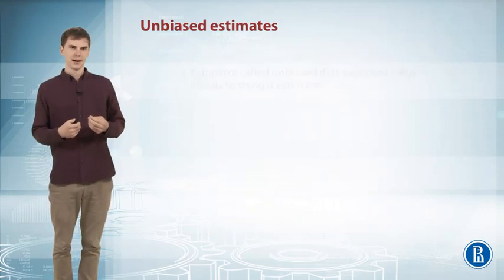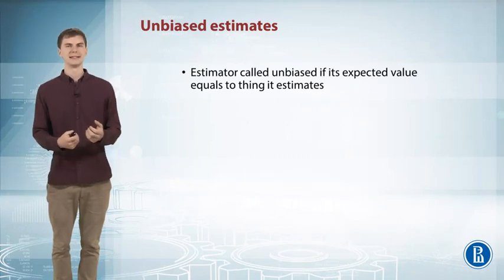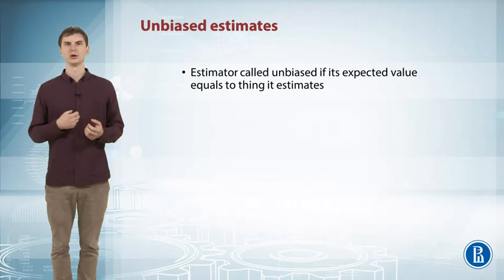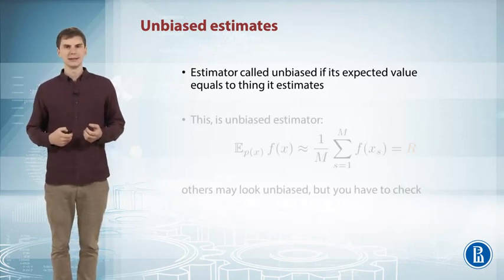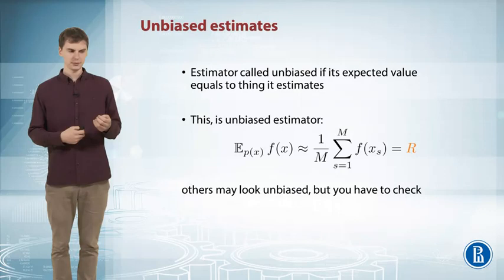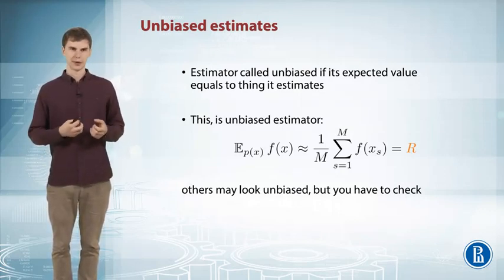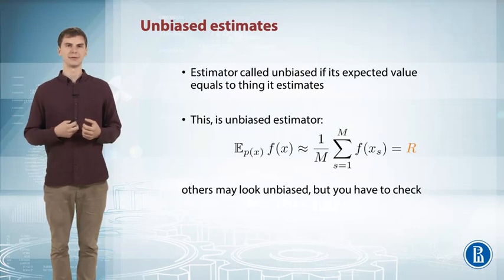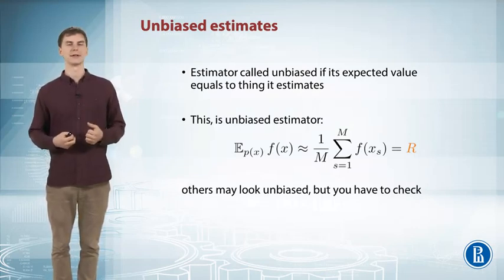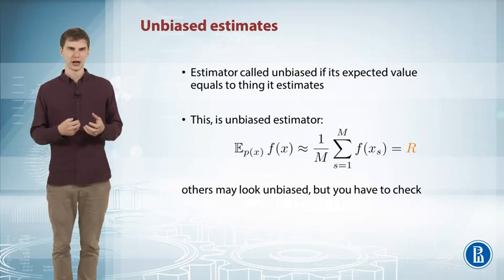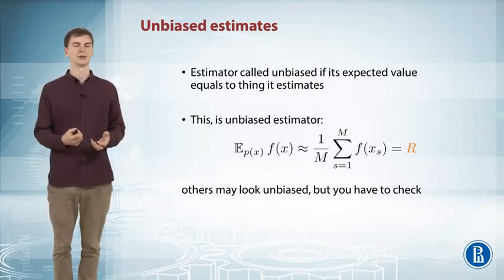And to summarize, an estimator is called unbiased if its expected value is equal to the thing which you want to approximate. And it's entirely non-trivial to understand if your estimator is unbiased or not. So for this simple estimator, an expected value of function can be unbiasedly estimated as an average with respect to samples. For anything more complicated than that, you have to think carefully and check that you're not going to biased territory.